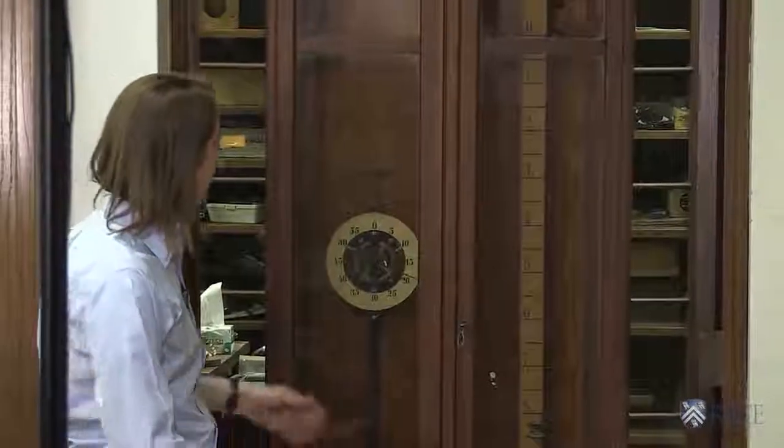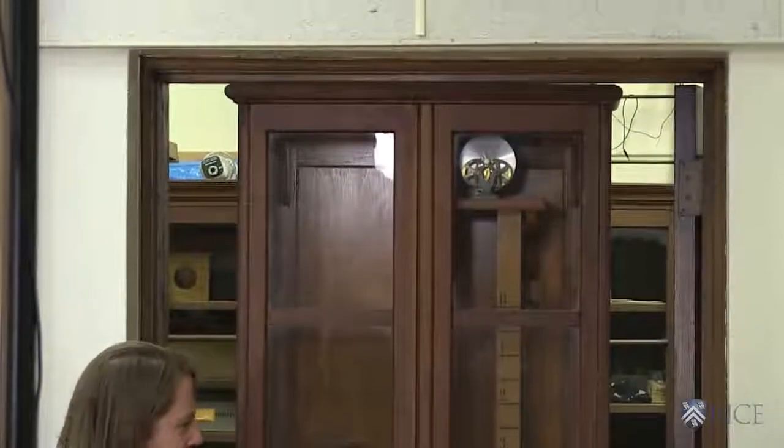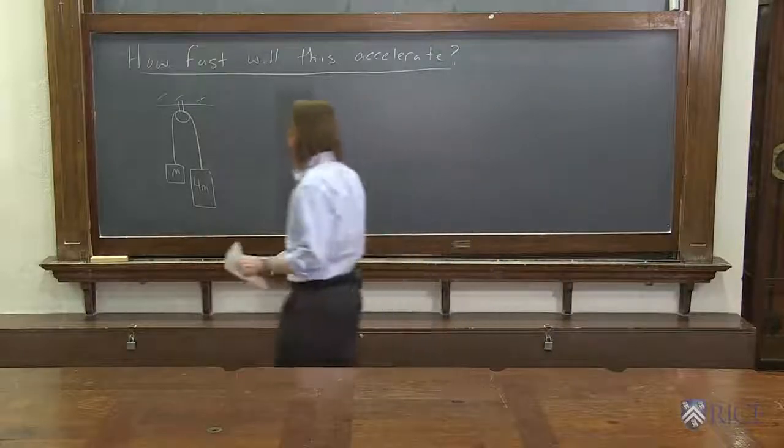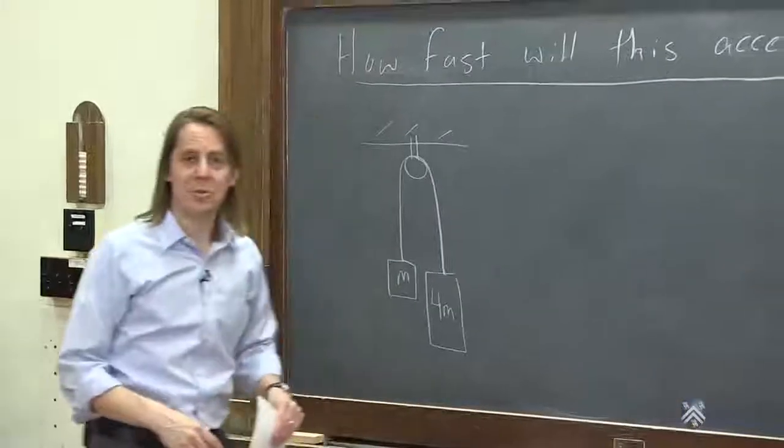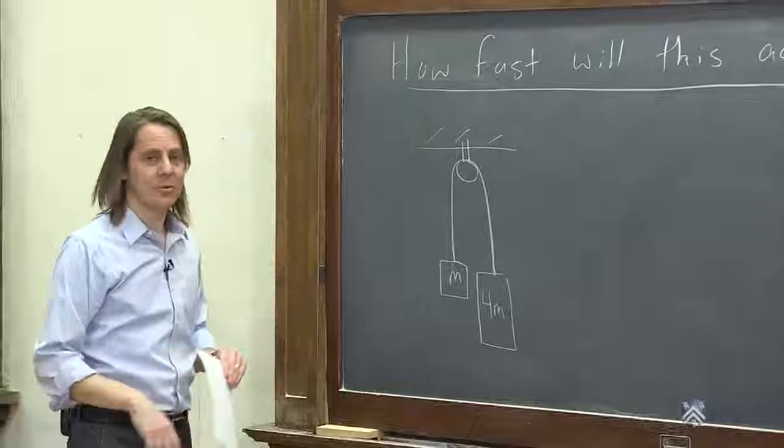One is it doesn't work, so I could probably fix it if I had six months to spare, and two is I can't actually get it out of the door anymore, so the building has settled around the Atwood machine, and we can't even bring it into the lecture hall. So we're just going to have to do the Atwood machine theoretically. We'll do the theoretical version without the demonstration.